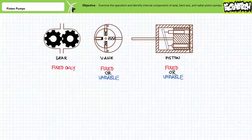A fixed displacement pump, as the name implies, is incapable of varying displacement per revolution. A variable displacement pump, in contrast, uses movable internal components to selectively increase or decrease displacement per revolution as required.